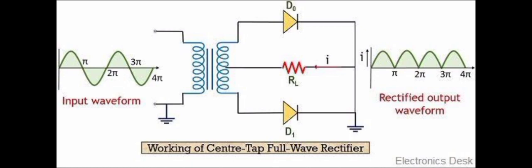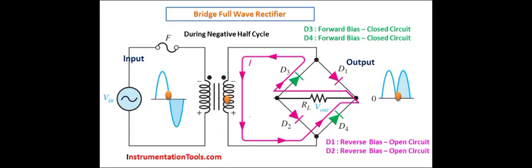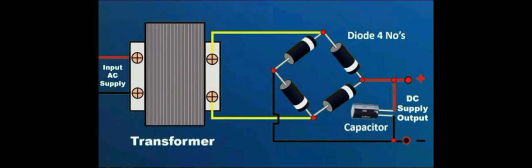In full wave rectifier the full AC is converted into DC. This is bridge rectifier. In bridge rectifier we use four diodes in bridge formation. So it is called as bridge rectifier. Bridge rectifier also convert full wave of input AC to DC. For better efficiency we use bridge rectifier.